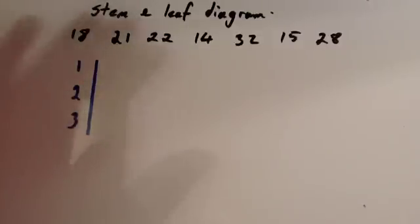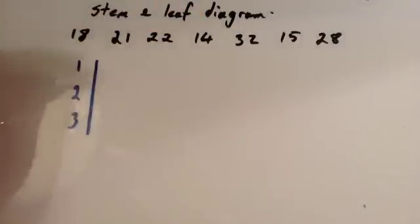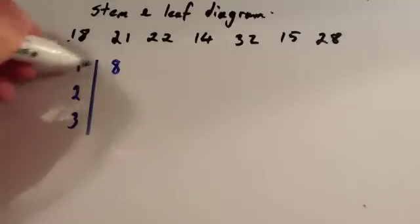What we're going to do is we're going to do an unordered stem and leaf diagram first of all. So we're just going to put these numbers into the stem and leaf diagram, and then we'll draw it again, and we'll order it. Okay. So, the first number here is 18, so we're going to put an 8 in where the 1 is to make 18.